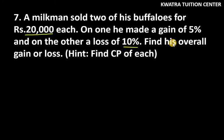Find his overall gain or loss. Hint: find CP of each. So the hint tells us that you have to find CP. How do we find CP? First we have the given information - the selling price.